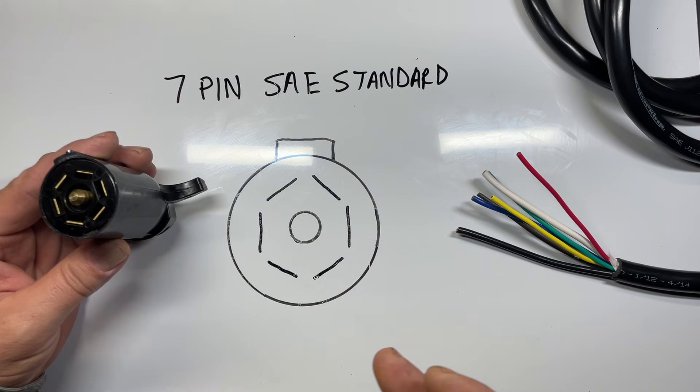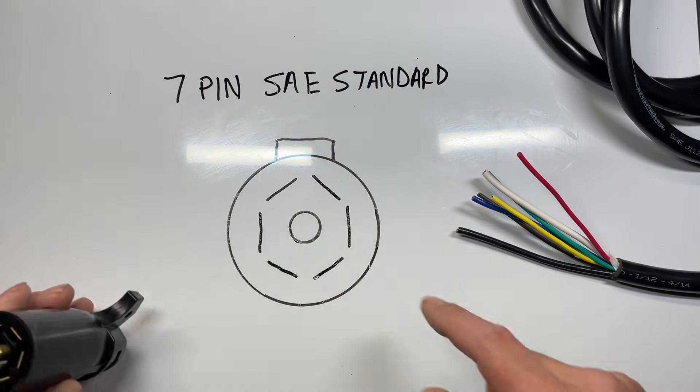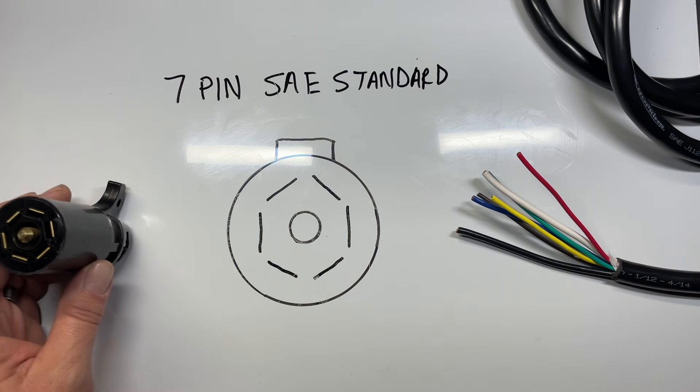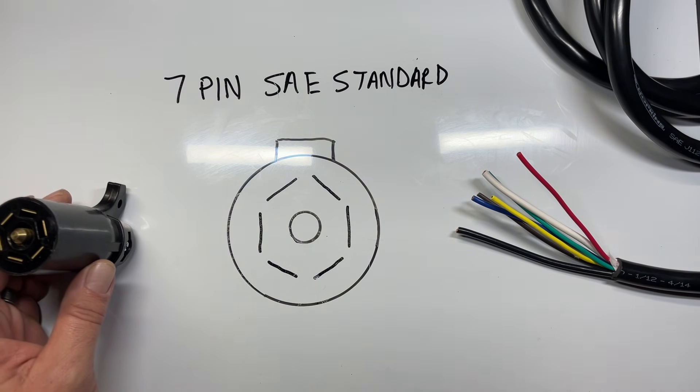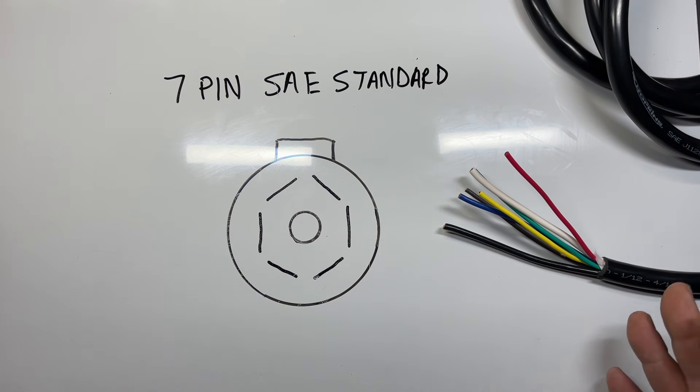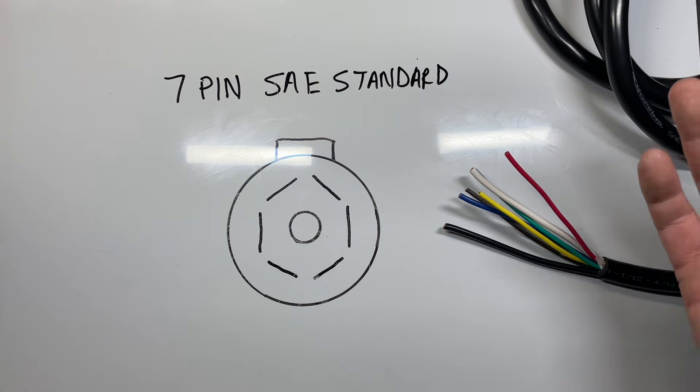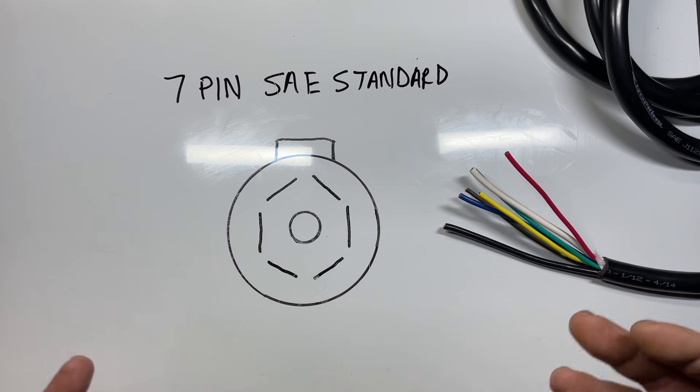There is a difference between two standards in the United States. One is a 7-pin SAE standard for regular trailers like dump trailers, goosenecks, and stuff like that. Then there's an RV standard, which I have this cable here. The difference between them is they have a little different color schematic, and it's okay to use one on the other so long as you identify the wires correctly.